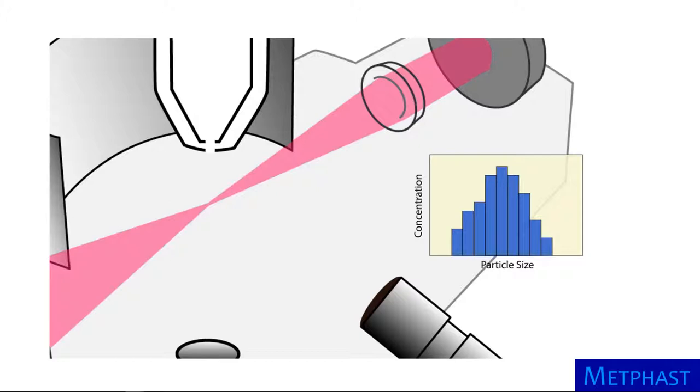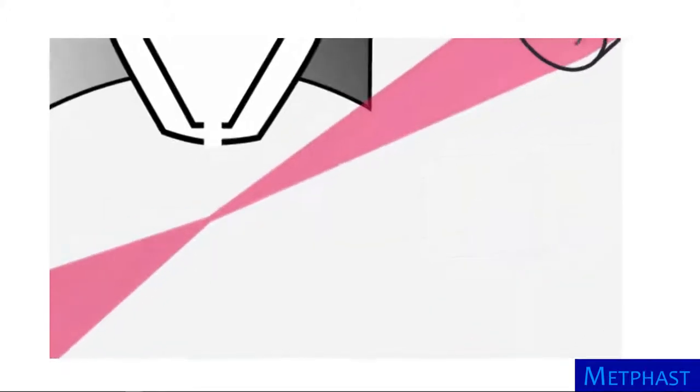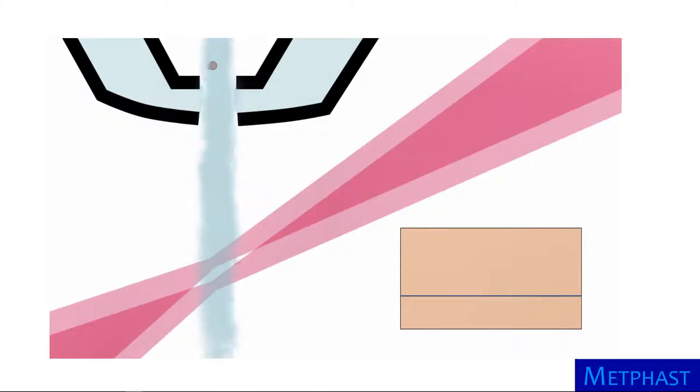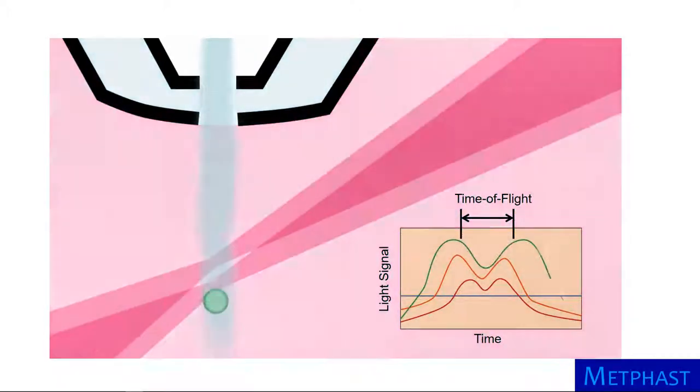Zooming in further, we can see how the size of each particle is measured. The accelerated aerosol passes through the sensing zone, which consists of two overlapping beams. The time it takes to move through these two beams is measured as the time of flight, which is depicted in the graph of light versus time.